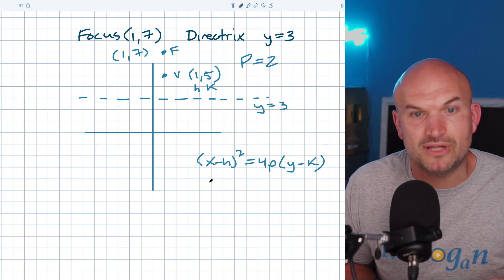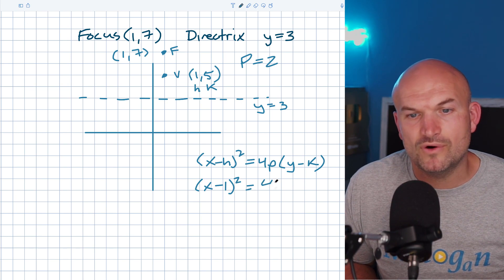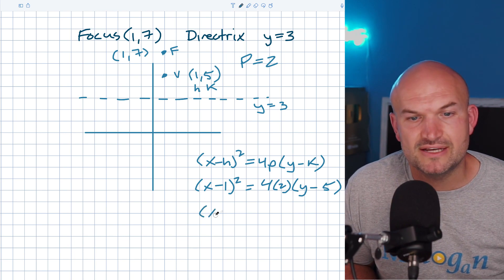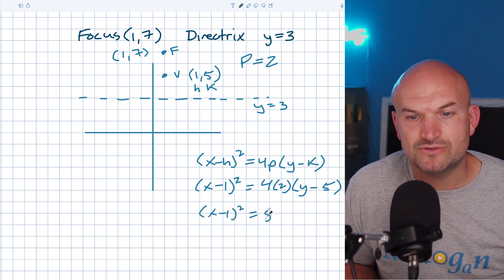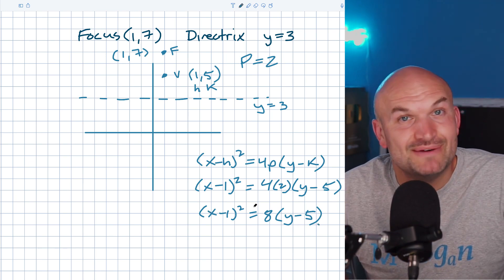We have our p, so let's plug in the values. I have (x - 1)² = 4 times 2 times (y - 5). Now we can simplify this: (x - 1)² = 8(y - 5). Now it's time to check out the next video.